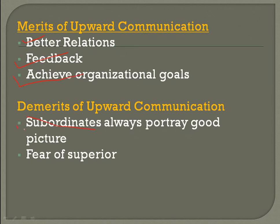Demerits of upward communication: subordinates always try to portray good — they hide negative points and focus only on positives. The second demerit is fear of superiors. When asked to speak before higher management, give suggestions, or describe project work, employees feel fear — maybe due to domination, authoritative nature, or other reasons. This fear does not let them open up, which is a significant demerit.